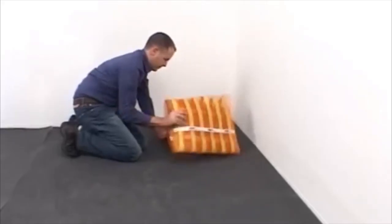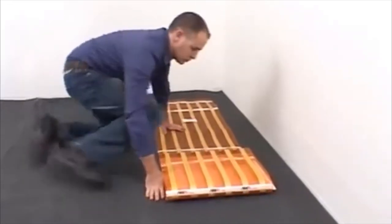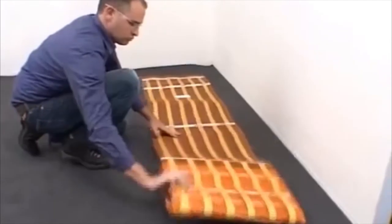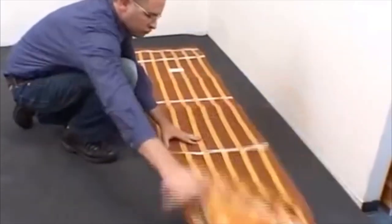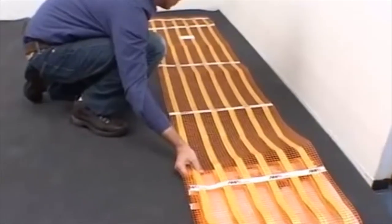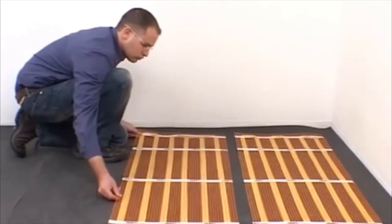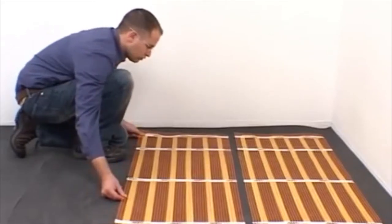Roll out the heating mats on top of the insulation material with the heating ribbon facing down and the fiberglass netting facing up. Place the mats so that the cold leads are closest to the connection box, leave a 4-inch, 10-centimeter gap between the wall and the heating mats. Leave a further 2-inch, 5-centimeter gap between each mat.